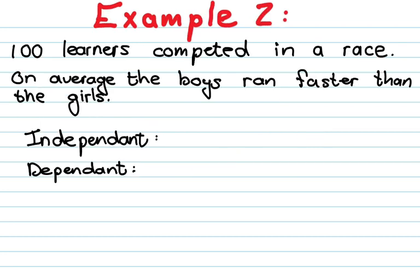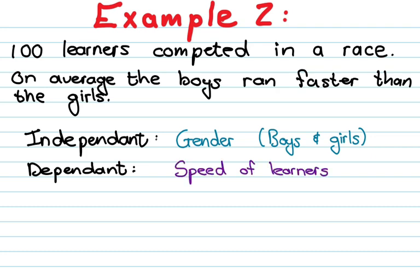In example number two, a hundred learners competed in a race, and on average the boys ran faster than the girls. The independent variable is the gender of the athletes, because I as the investigator decided to compare boys and girls. How fast they are running — their speed — is the dependent variable, because that is what I had to measure.